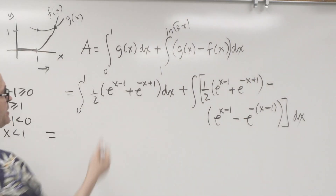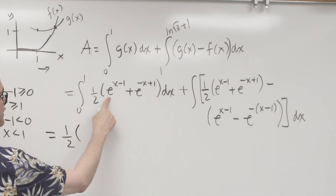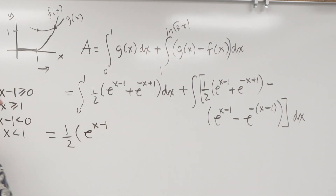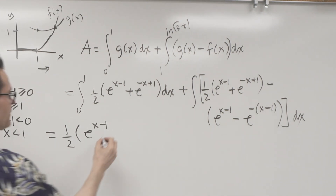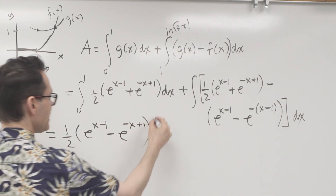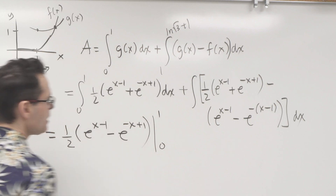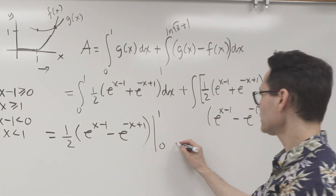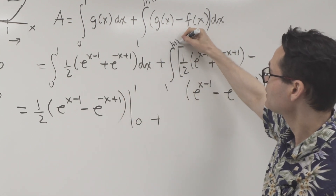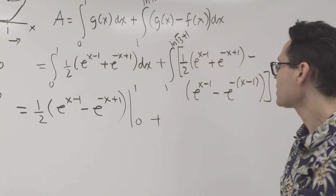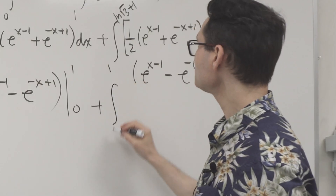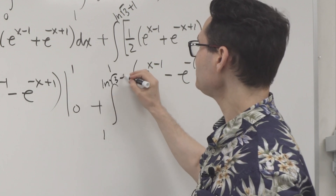I'm going to integrate. Taking out the half, the antiderivative of e^(x−1) is e^(x−1). By the reverse chain rule, the integral of e^(−x+1) is −e^(−x+1). Evaluating from 0 to 1. Over on the other side, I forgot to put in my limits — that's 1 to ln(√3)+1. I'm going to simplify the integrand for that second integral.